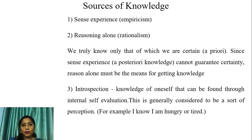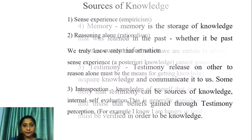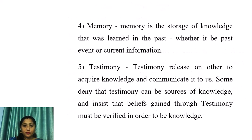The third source of knowledge is introspection — knowledge of oneself — that can be found through internal self-evaluation. This is generally considered to be a sort of perception. For example, I know I am hungry or tired. The fourth source of knowledge is memory, which is the storage of knowledge that was learned in the past, whether it is a past event or current information.